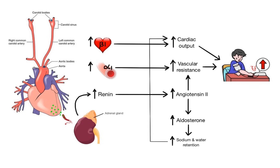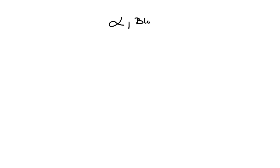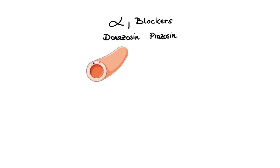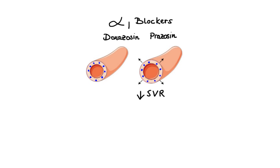Now let's talk about antihypertensive agents. There are several major classes of antihypertensive drugs which work by interrupting different parts of this blood pressure regulating system. First we have alpha-1 blockers such as doxazosin and prazosin, which block alpha-1 receptors on the smooth muscle, thus causing decrease in systemic vascular resistance and ultimately decrease in blood pressure.